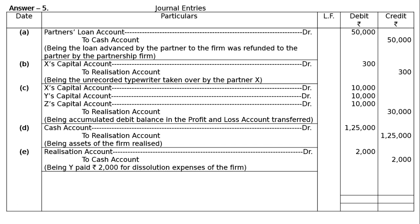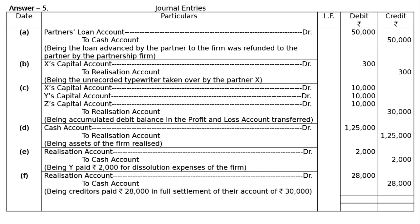Part F: Creditors paid rupees 28,000 in full settlement of their account of rupees 30,000. Entry: Realization Account debited to Cash Account rupees 28,000, being creditors paid rupees 28,000 in full settlement of their account of rupees 30,000. The total of both debit and credit columns amounts to rupees 1,95,300.